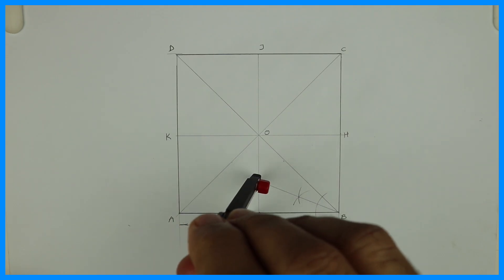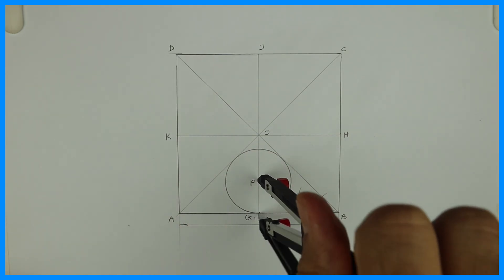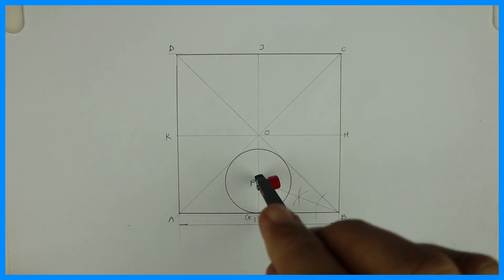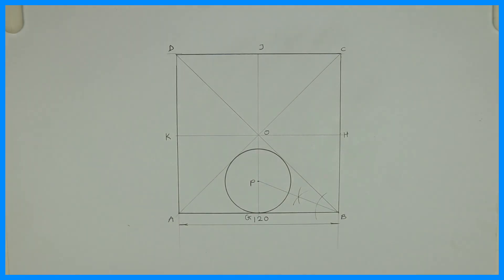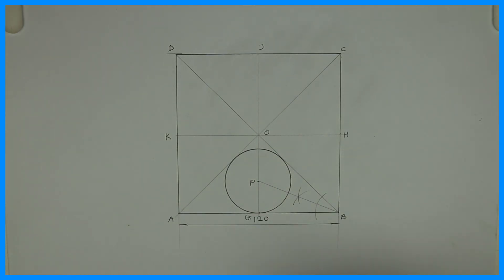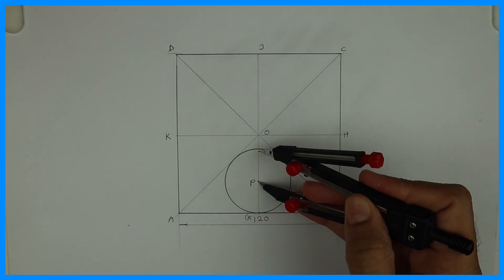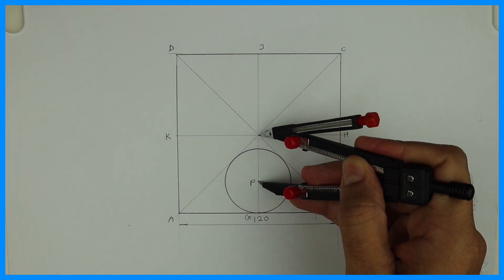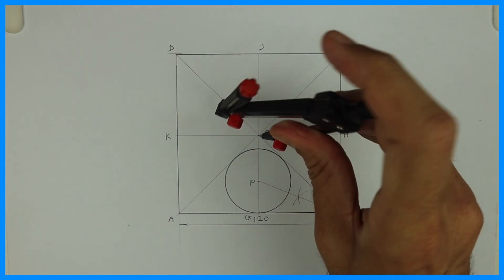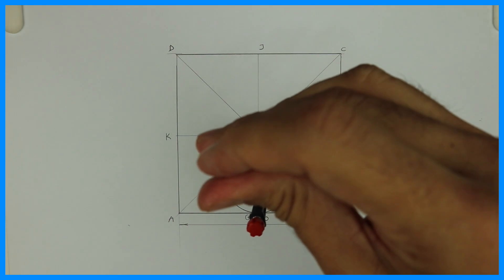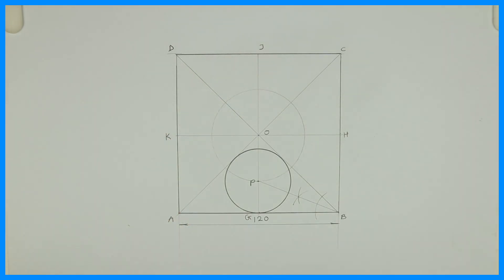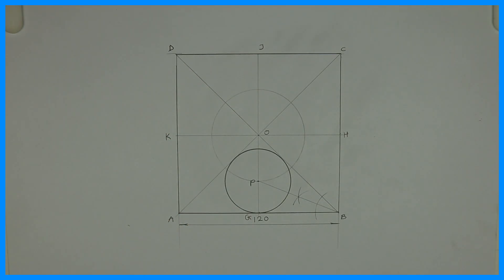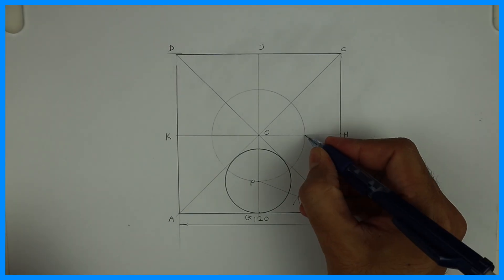The circle should touch one side of the square and two other circles. Now we can transfer this point — we take O to P, and from O we can draw a circle. This will help us avoid doing the same construction again and again, so we get the center point very easily.